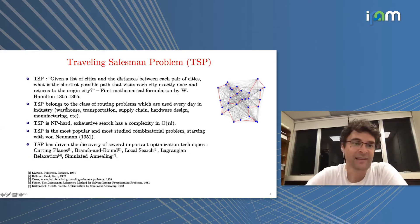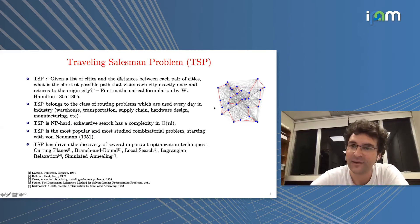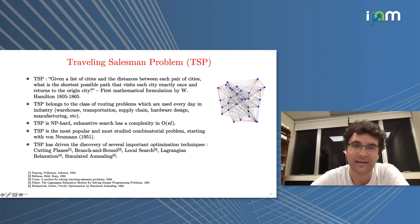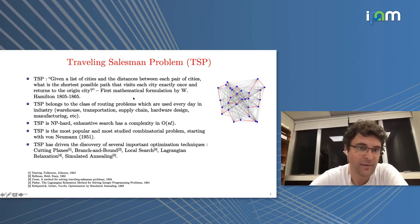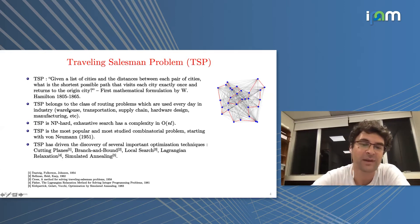You probably know TSP well, but just in case: you have a set of cities and the goal is to find the shortest possible path starting from one city, going through all cities exactly once, and returning to the original city. This problem was first formulated by William Hamilton, and TSP belongs to the larger class of combinatorial problems used every day in industry — warehouse management, transportation, supply chain, hardware design, manufacturing, and so on.